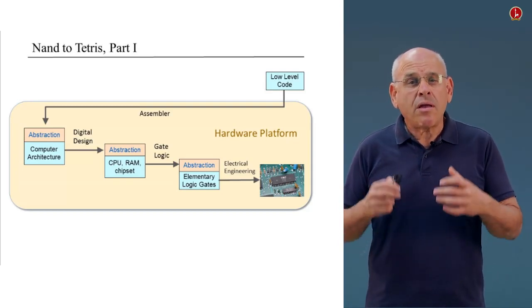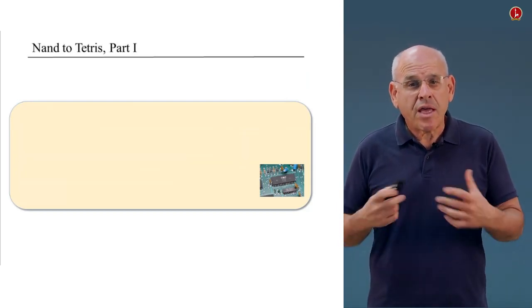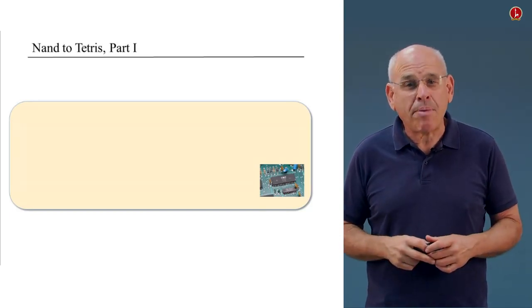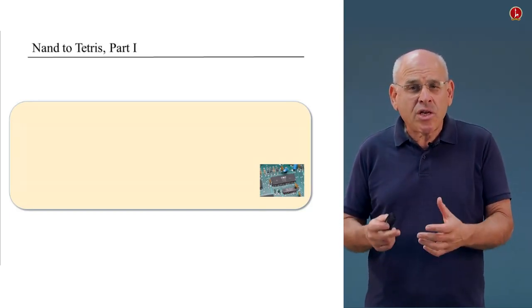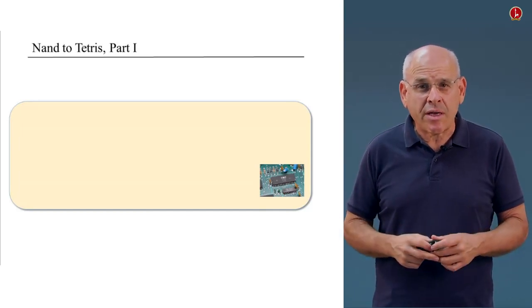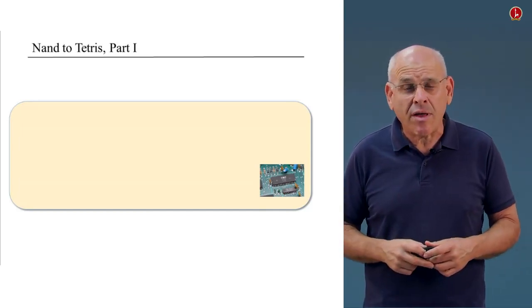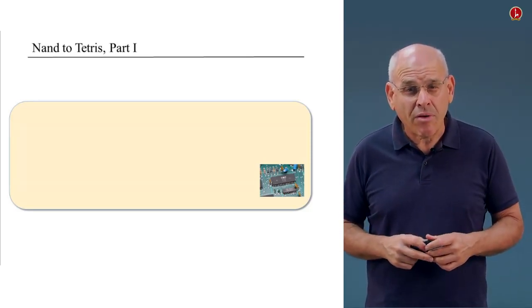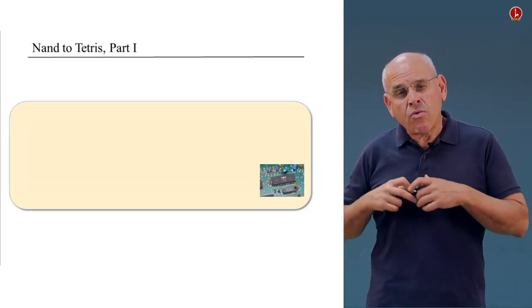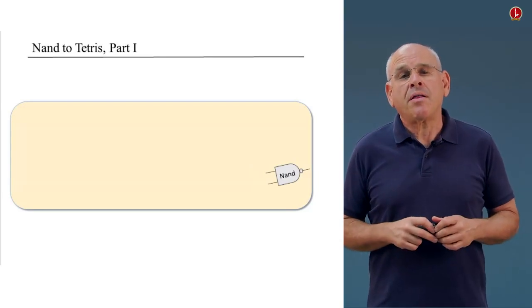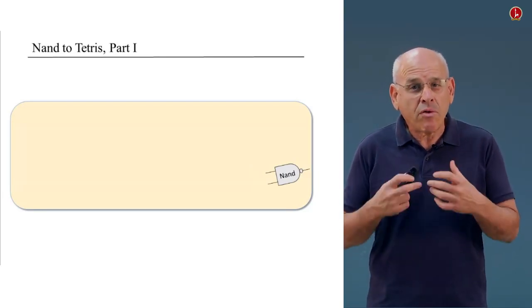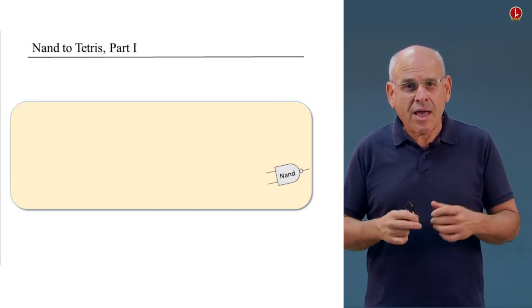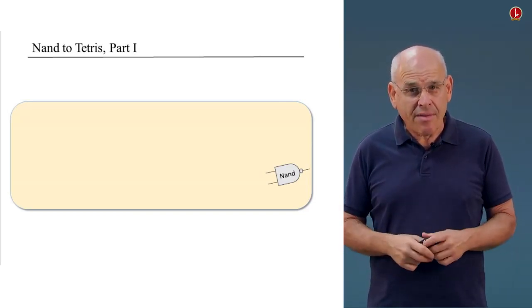We're going to do it bottom up. Here we are at the very low level of everything in applied computer science. This is actually not computer science — this is electrical engineering and solid state physics and so on, things that neither Noam nor I understand much about. Therefore, we're going to abstract away this hardware and focus instead on the most elementary logic gate that we can think of, which is called NAND.